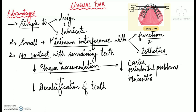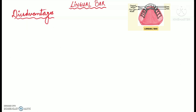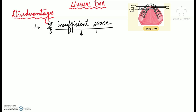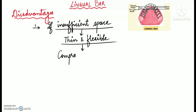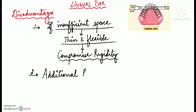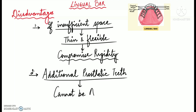Due to decreased contact with remaining teeth, there is also negligible decalcification. As for disadvantages: if sufficient space is not available, the lingual bar may be made thin and flexible, compromising its rigidity. Additionally, future placement of one or more anterior teeth cannot be planned easily, as it is difficult to add additional prosthetic teeth to the lingual bar.